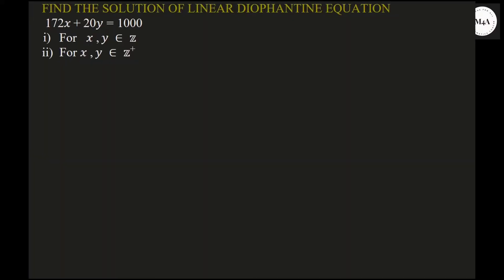Welcome to the next class. In today's class, we will discuss one more example on finding the solution of a linear Diophantine equation. The equation is 172x plus 20y equals 1000. We need to find the solution for x, y belonging to Z (integers), and also for x, y belonging to Z-plus (positive integers).